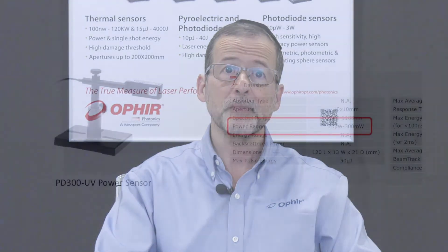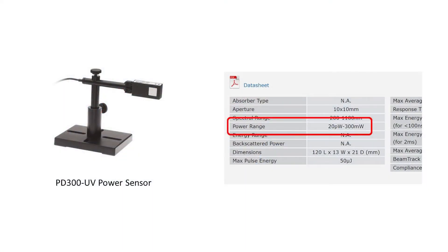A typical laser power sensor can measure powers over many orders of magnitude. For example, the Ophir PD300UV, a photodiode-based sensor for UV and visible wavelength beams, can measure powers from as low as 20 picowatts up to 300 milliwatts. However, if we consider the electronics inside the power meter, one stage of amplification will typically have a dynamic range of maybe several tens to one.